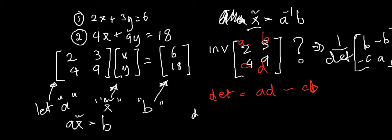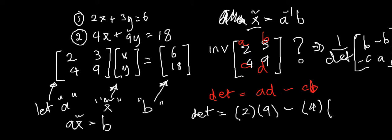So let's work that out. We start with the determinant: A is 2, D is 9, C is 4, B is 3. So the determinant equals 2 times 9 minus 4 times 3, which is 18 minus 12, equals 6. So our determinant is 6, meaning 1 over the determinant is 1/6.